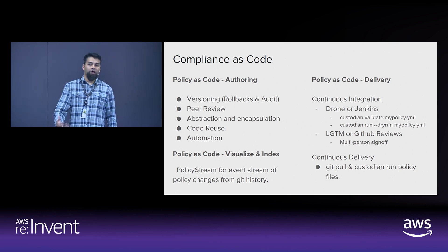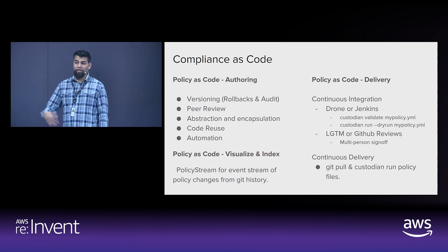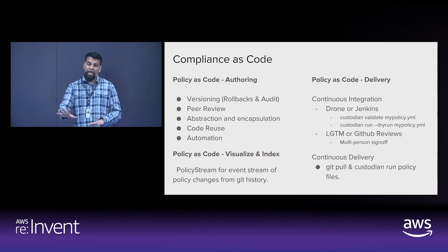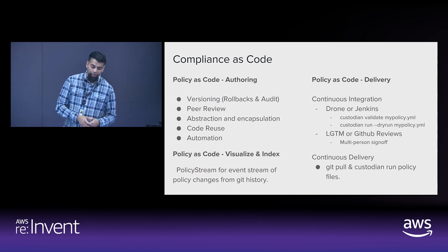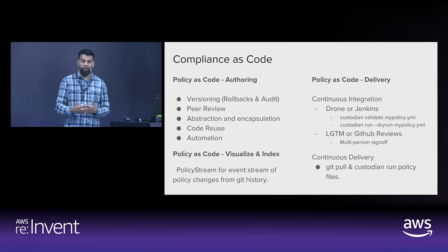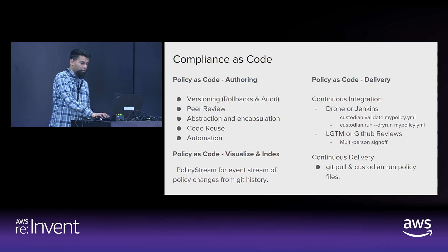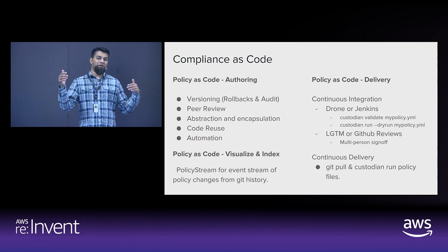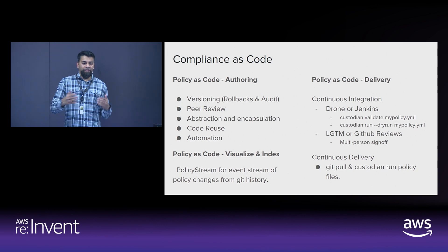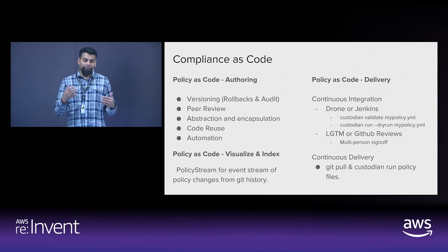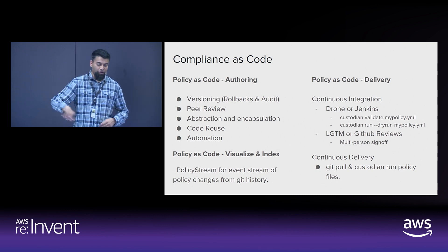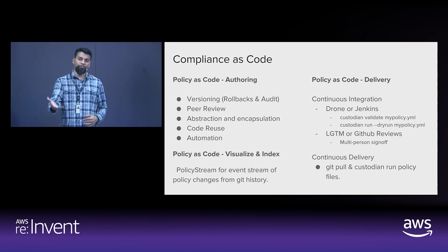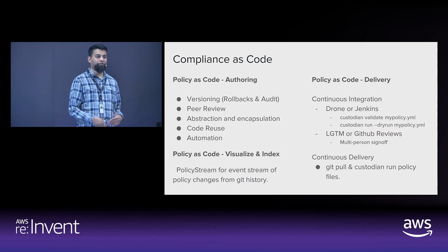On the CI delivery side, Custodian validates all config files with a dynamically generated JSON schema. You can also do a dry run, which executes against the environment but takes no actions — it just shows you what it would have matched based on your filters. You can integrate with GitHub reviews and Bitbucket for multi-person sign-offs on policies. A new tool we just distributed is PolicyStream, which automates taking a Git history of a repo and turning it into a logical diff of all policy changes, sending them to Kinesis or indexing into a database.